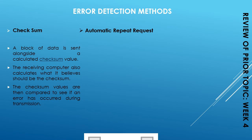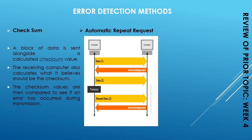After that we discussed automatic repeat request. This form of error detection uses a system of acknowledgements and timeouts. Automatic repeat requests are often used to ensure reliable transmission over an unreliable service. The sender sends the data and the receiver sends an acknowledgement. If the receiver does not send an acknowledgement, the timeout occurs and the sender transmits the data again until an acknowledgement is received.